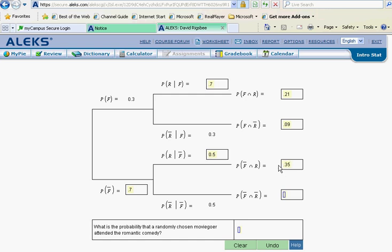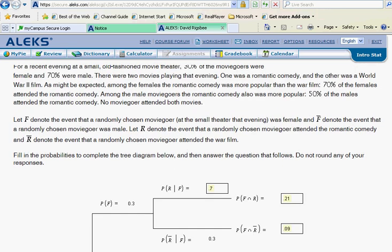And so we have all of our probabilities over here, but now we have to answer the question. So now we get to the final question: what is the probability that a randomly chosen moviegoer attended the romantic comedy? So let's go back up here once again, and we do have to kind of read this closely here and look at our symbols. But notice here, R denotes the event that a randomly chosen moviegoer attends the romantic comedy. So R stands for romantic.